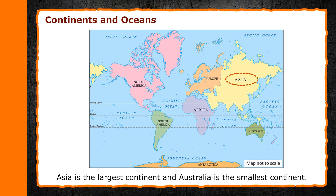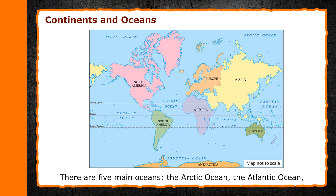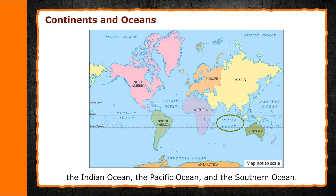Asia is the largest continent and Australia is the smallest continent. There are five main oceans: the Arctic Ocean, the Atlantic Ocean, the Indian Ocean, the Pacific Ocean and the Southern Ocean.